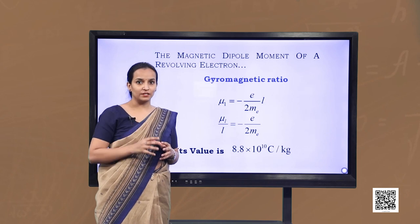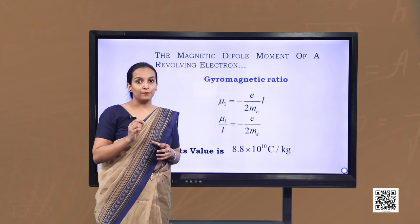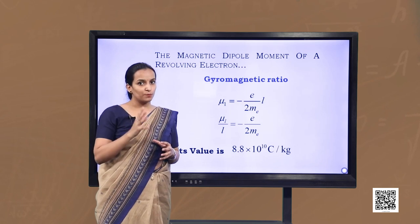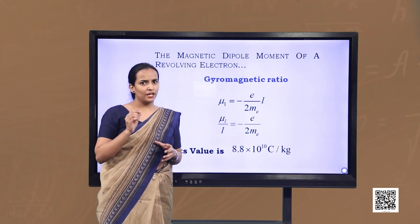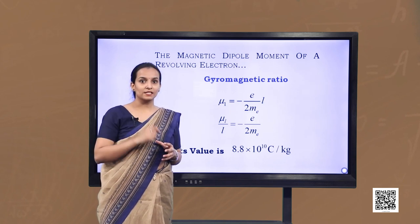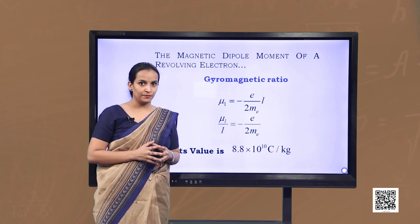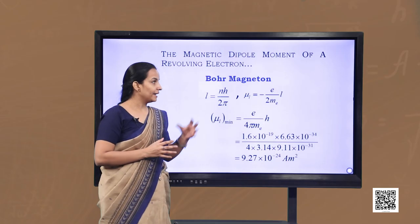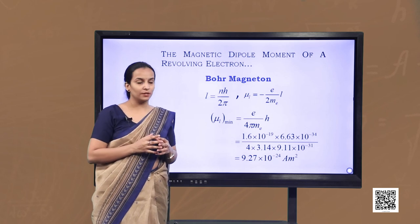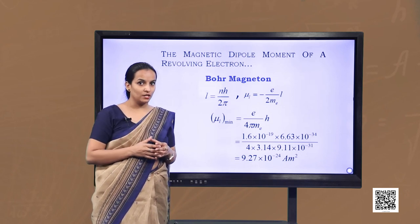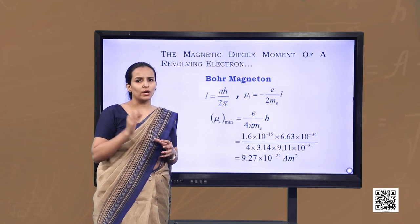This confirms that even at the atomic level there is a magnetic moment, validating Ampere's hypothesis of atomic magnetic moments. To assign a value to this atomic dipole moment, we define the Bohr magneton. The Bohr model hypothesizes that angular momentum takes discrete values: L = nh/2π, where n is a natural number (1, 2, 3, ...) and h is Planck's constant. This condition of discreteness is called the Bohr quantization condition.